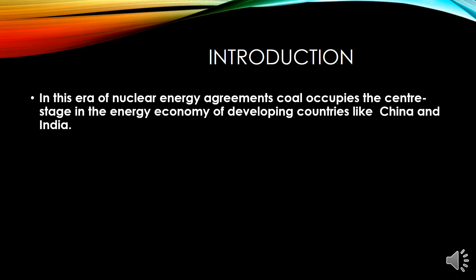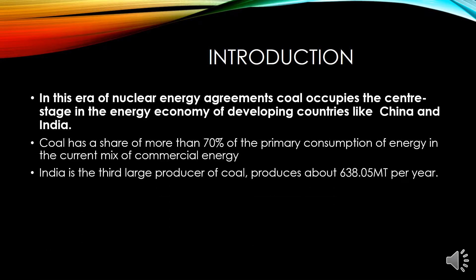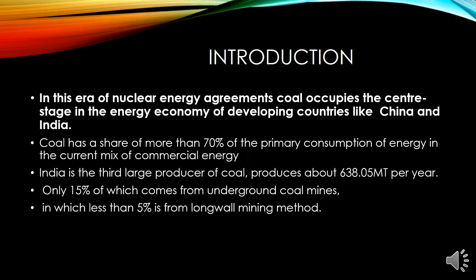In the nuclear energy era, we need to understand that coal is very much important for developing countries like China and India. About 70% of energy is coming from coal. India is the third largest producer of coal and produces about 638.05 million tons per year, but only 15% of which comes from underground coal mines, in which less than 5% is from longwall mining method.